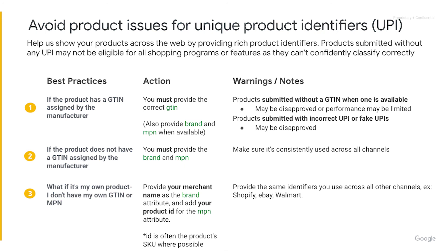What happens if it's my own product and I don't have my own GTIN or MPN? In this case, we recommend that you provide your merchant name as the brand attribute and add your product ID for the MPN attribute. Keep in mind that the ID is often the product SKU wherever possible. As mentioned before, you want to provide the same identifiers you use across all channels — for example, Shopify, eBay, and Walmart.